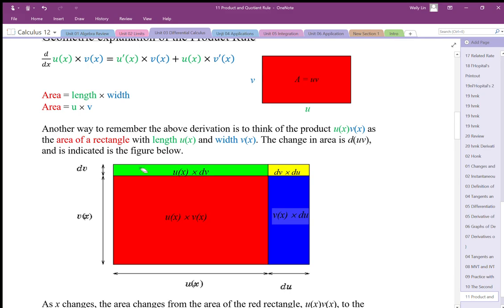The change in this piece here, the green area, is represented by this length, u of x, times the change in v, or dv. So this is u of x times the derivative, or change, in v. This length times the change in v gives me the green area.